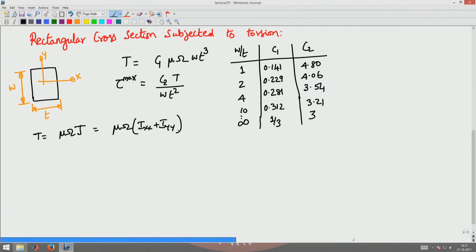In particular it will be mu omega i_xx plus i_yy because polar moment of inertia is x squared plus y squared dA. For the rectangular section this will be mu omega by 12 into w t cubed plus t w cubed.